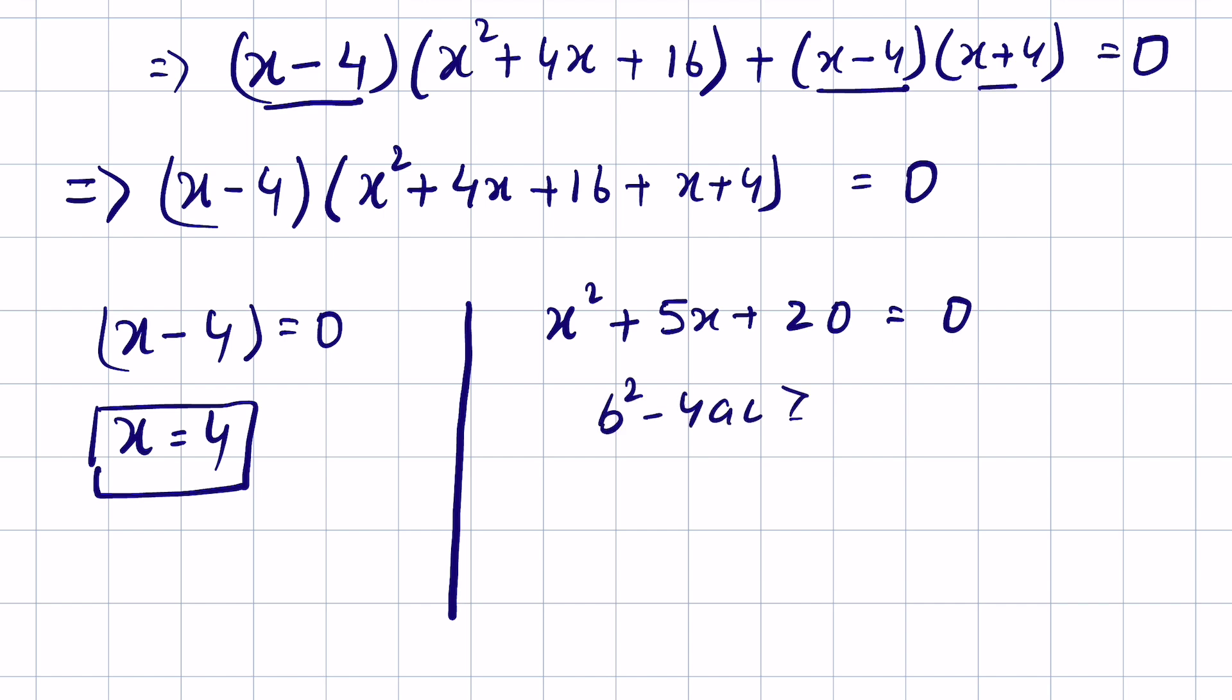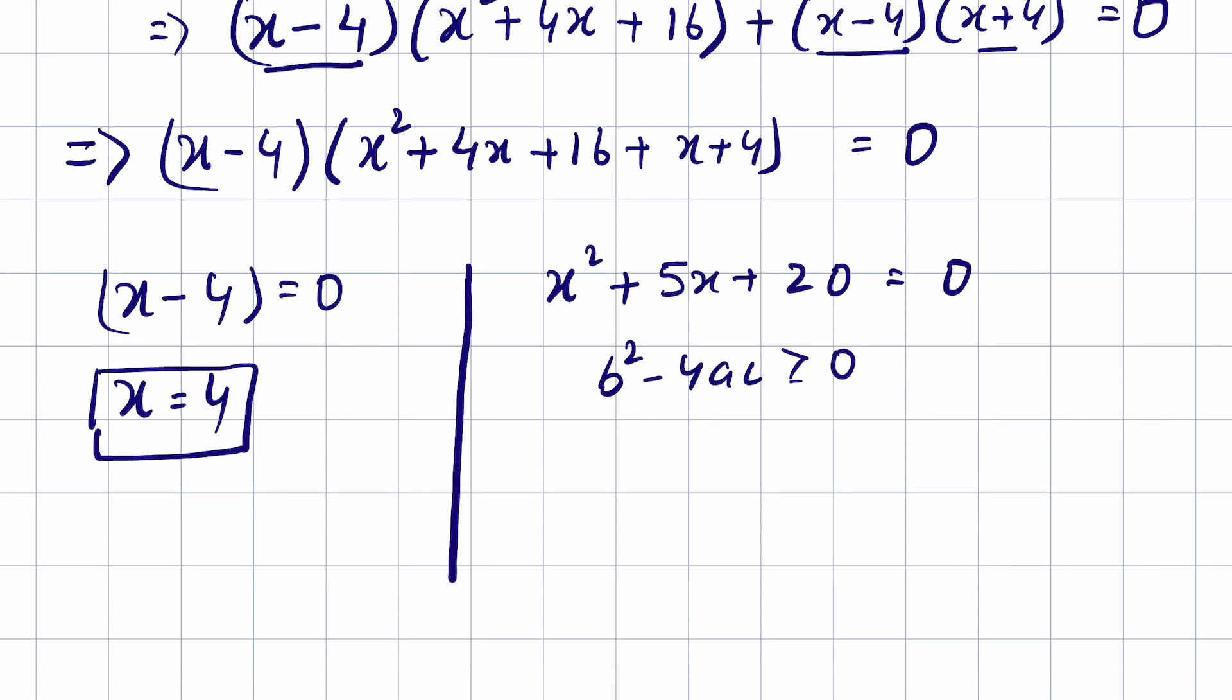Here b = 5, so 5² - 4(1)(20) = 25 - 4×20.